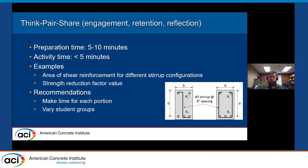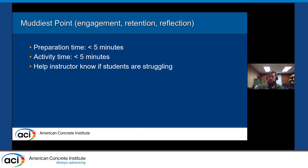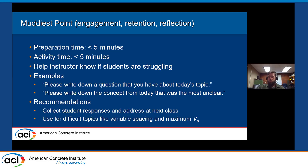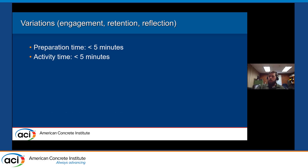The muddiest point paper is again not very time-consuming to prepare or include in class, but provides really good feedback to help the instructor know if students are struggling. You can have students write down a question about that day's topic or the concept from class that was most unclear. Good examples for shear relate to variable stirrup spacing and maximum V_u. We recommend collecting these at the end of class and using them to inform your next class delivery.